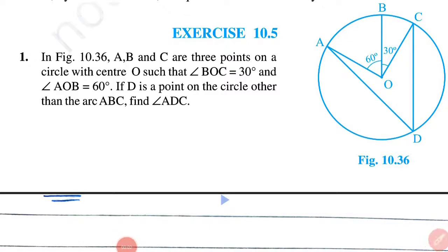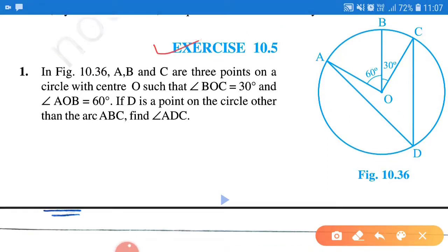Hello students, in this session we are going to study exercise number 10.5, question number 1. In figure 10.36, A, B and C are three points on a circle with center O such that angle BOC is equal to 30° and angle AOB is equal to 60 degrees. If D is a point on the circle other than arc ABC, find angle ADC.